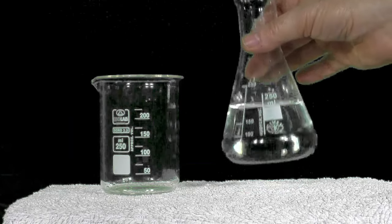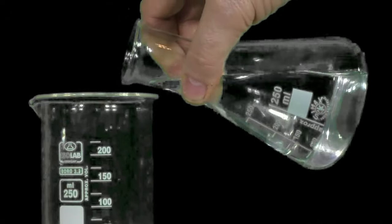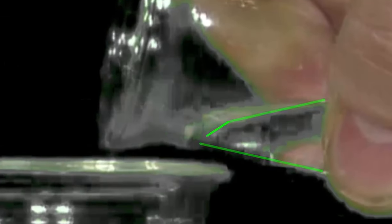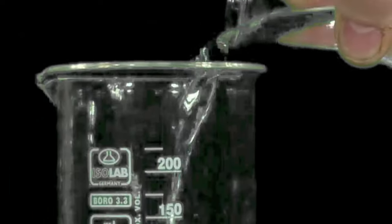Water's weight and changeable shape makes it find the lowest place in its container. As the water reaches the lip of the flask, there's nothing to hold it back, and its weight pulls it outside the flask and downwards in a stream. Water's changeable shape enables it to flow. That's why liquids are called fluids.